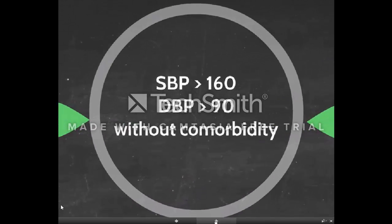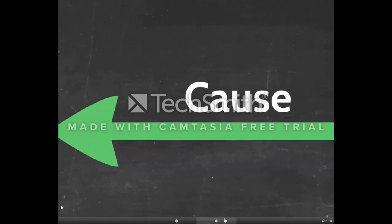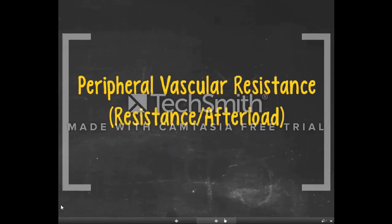With hypertension, the patient's systolic would actually be greater than 140 — that was a typo on the slide — and diastolic greater than 90 without comorbidity. If a patient has a comorbidity such as diabetes, we would want the blood pressure more controlled, around 120 to 130 systolic and diastolic 70 to 80. Some causes include peripheral vascular resistance, which is increased with increased afterload — if you have increased resistance that the heart must overcome to circulate blood, it can also increase pressure.